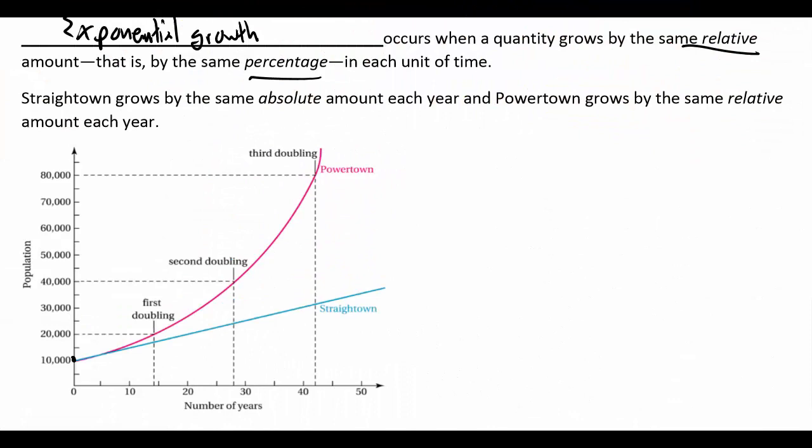So graphically, let's take a look at how these two growth factors impact how long it takes something to grow. We're going to start off with a population of 10,000 here. Now notice in Straighttown this is a linear growth, so it's adding the same amount each time. The first time it hits 20,000 looks about there, so it takes about 25 years for it to double.